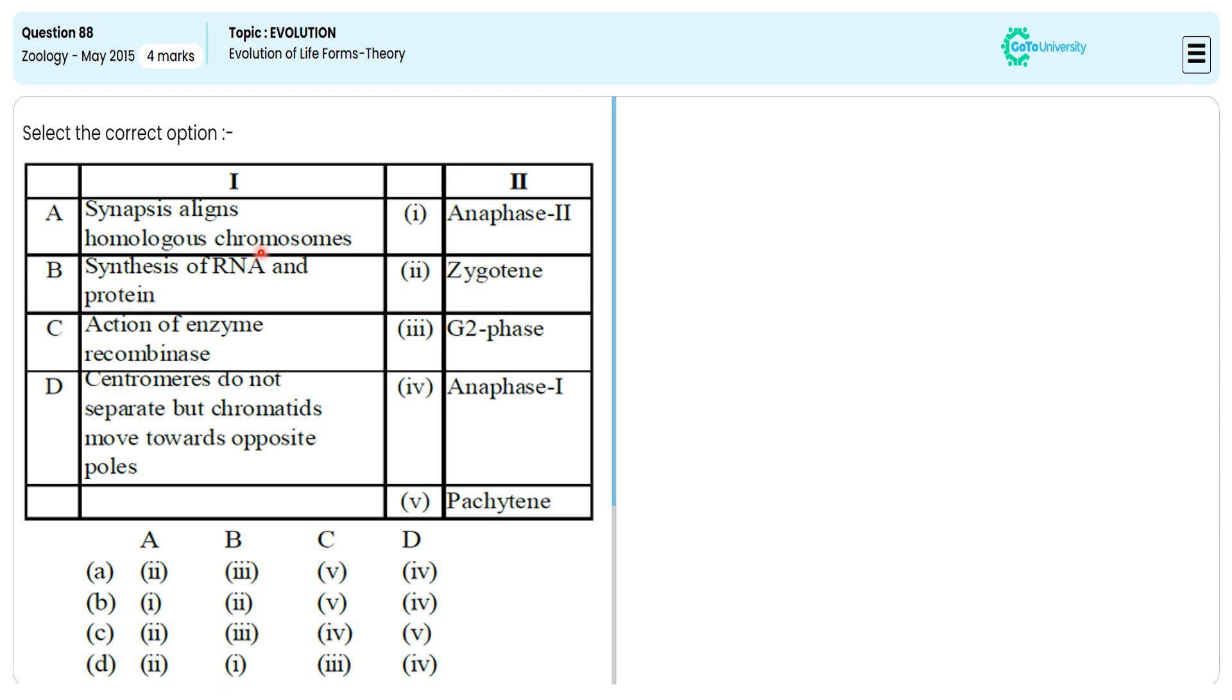Synapsis of homologous chromosomes—in the case of pachytene stage. If you're talking about G2 phase, this is where protein synthesis is happening. The recombinase enzyme activity we are observing in the case of pachytene stage. Centromeres do not separate but chromatids move towards the opposite poles—that we are observing exactly in the case of anaphase I.